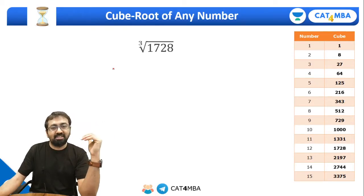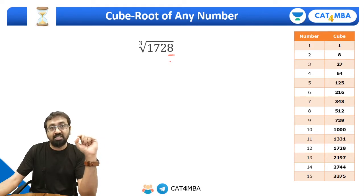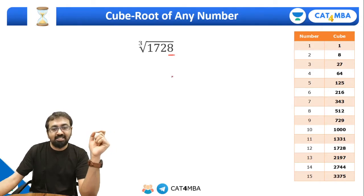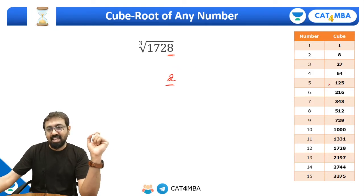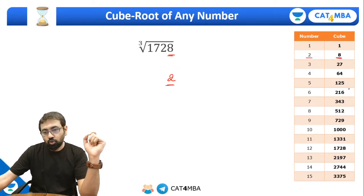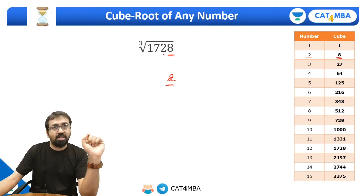Suppose you have a number like 1728 and don't know its cube root. Look at the last digit — it's eight. Which digit will have eight as the last digit in its cube? Digit two, because two cubed is eight. No other number will have last digit as eight. So the cube root ends with two. I'm talking about cube root of a perfect cube number, so I know that 1728 is a perfect cube. Now, strike off the last three digits and look at what remains — it's one.